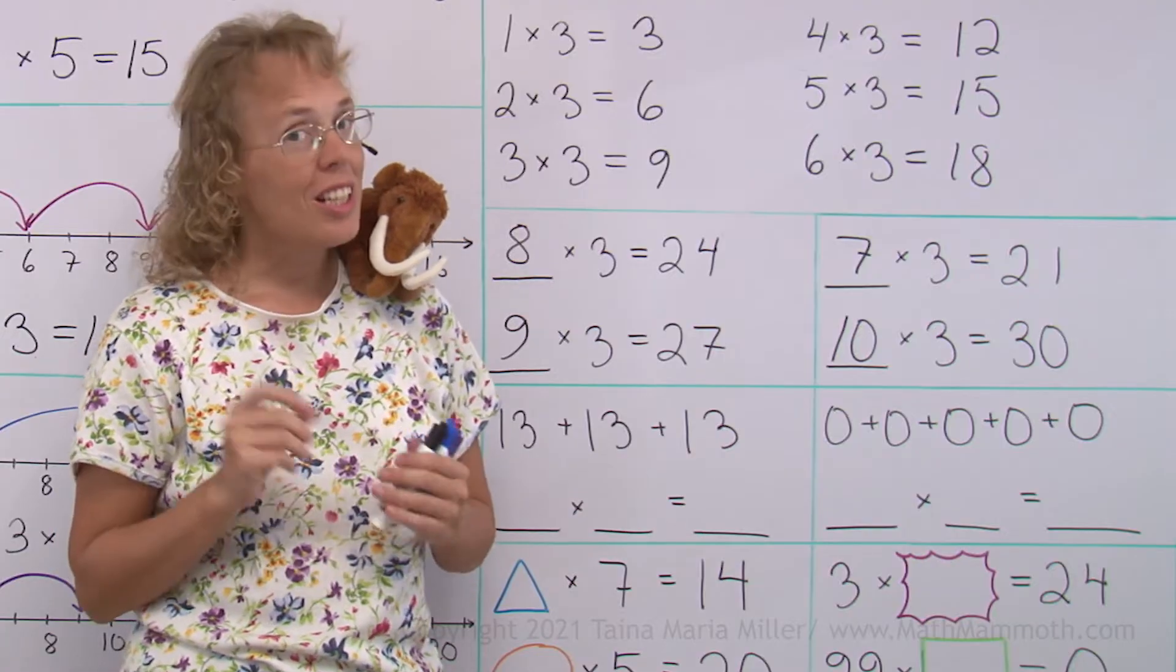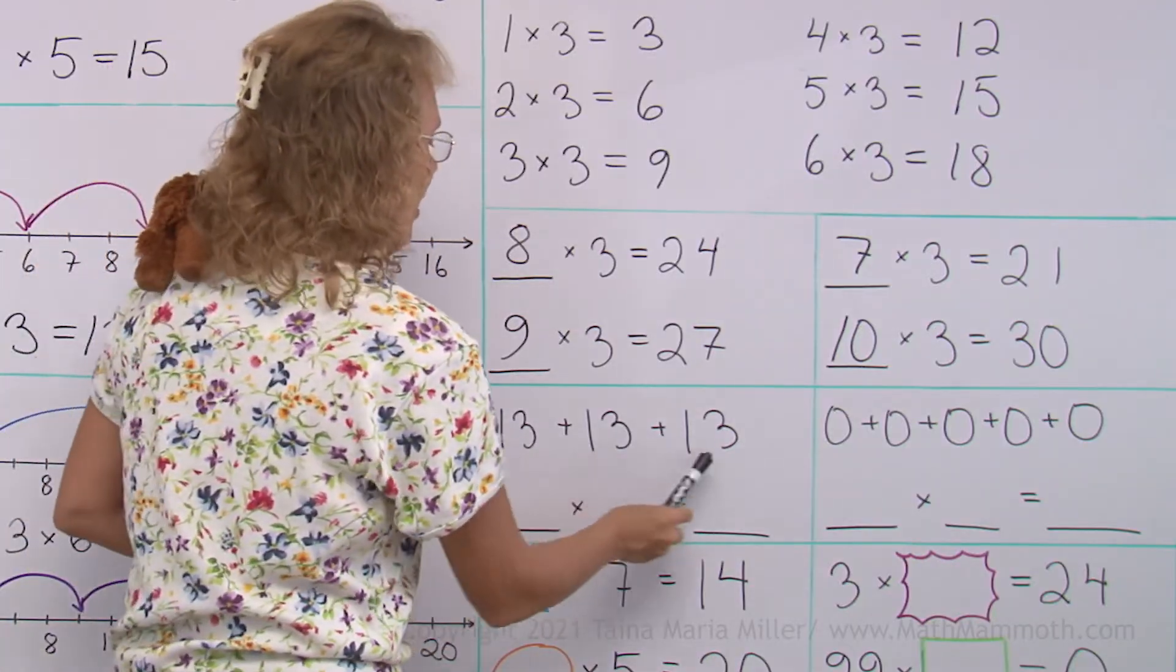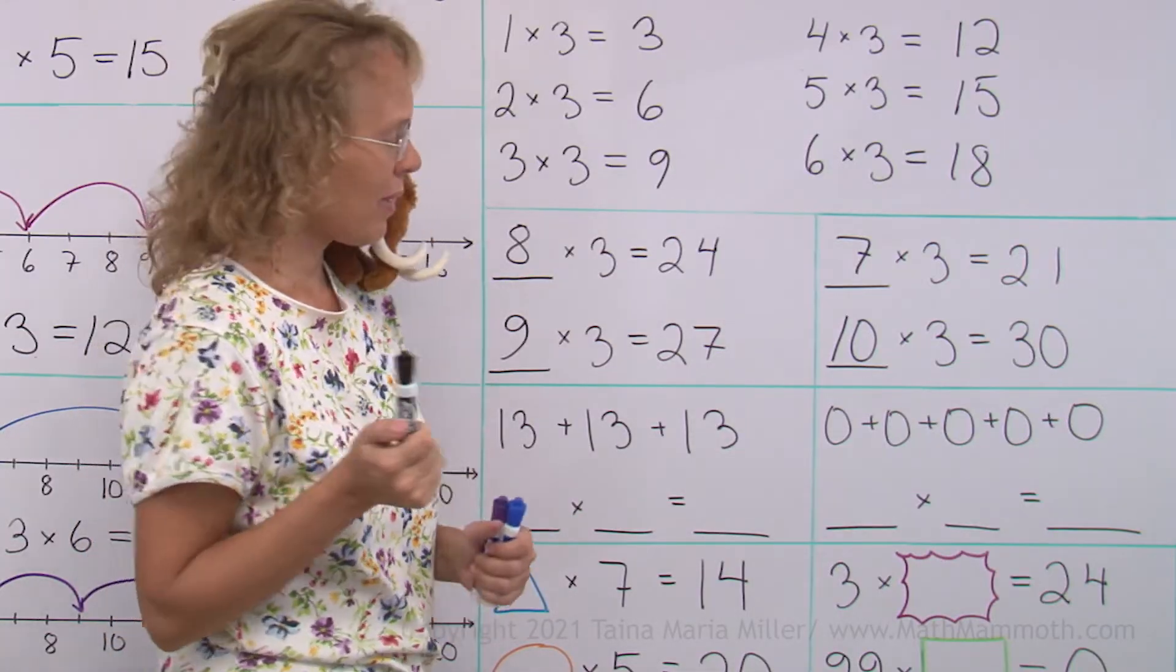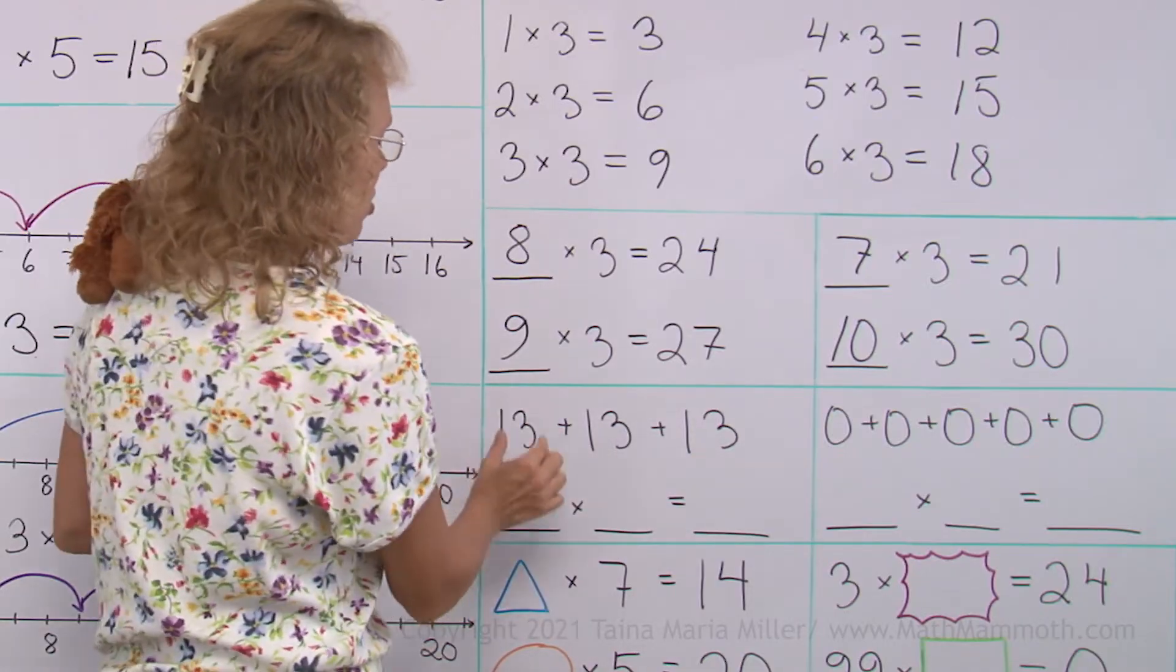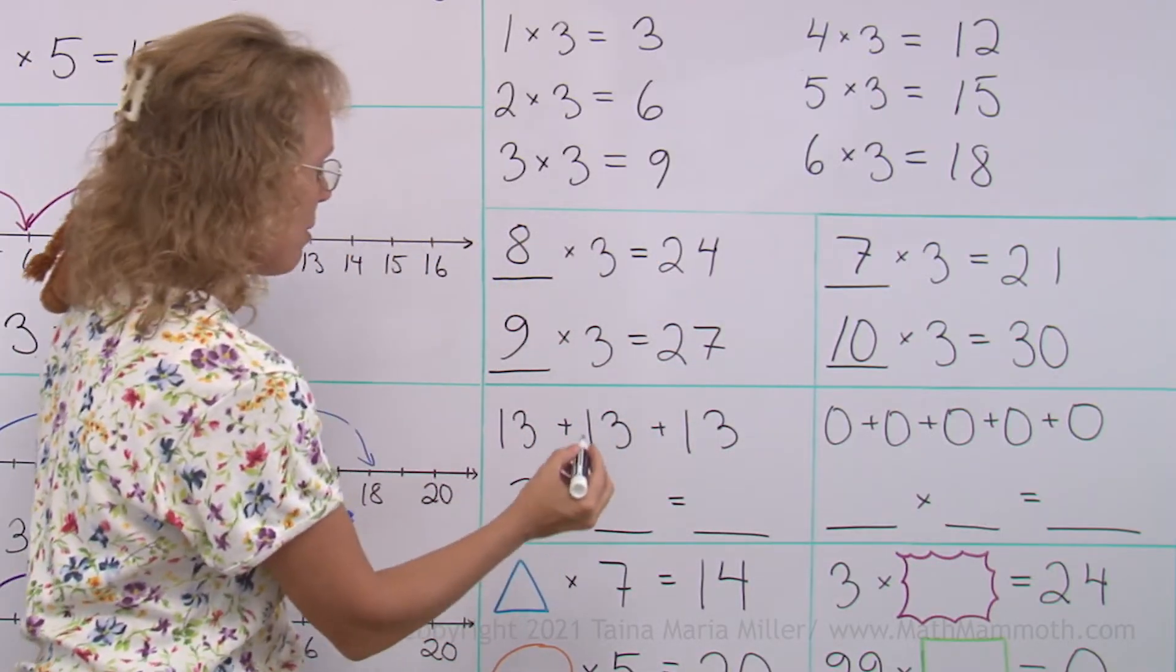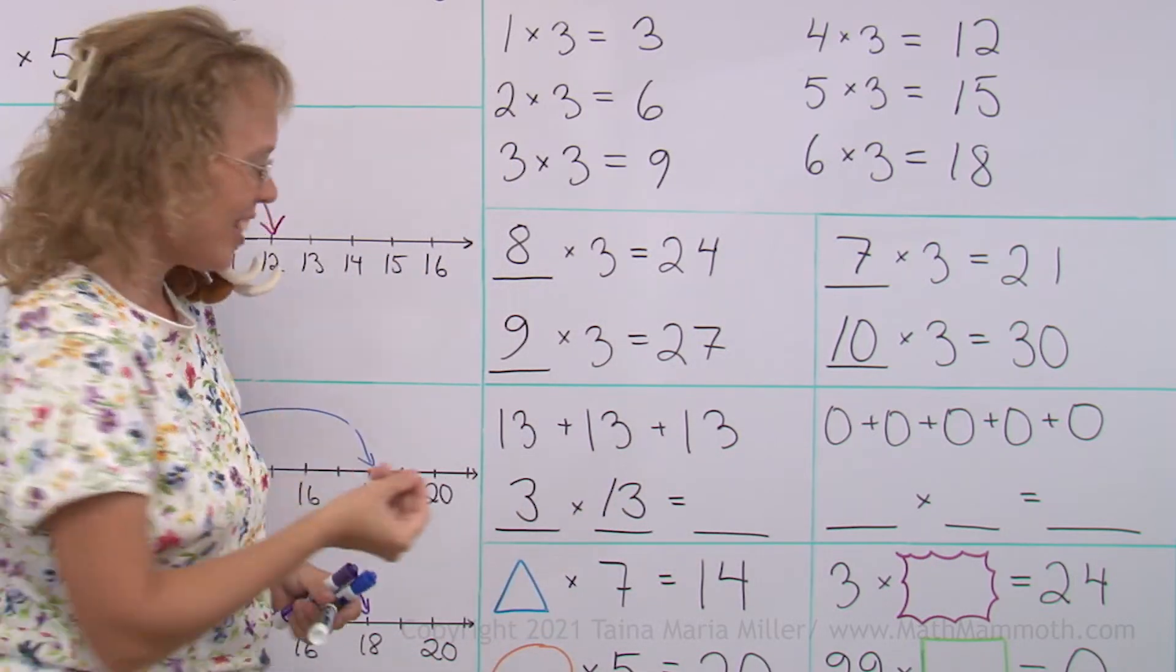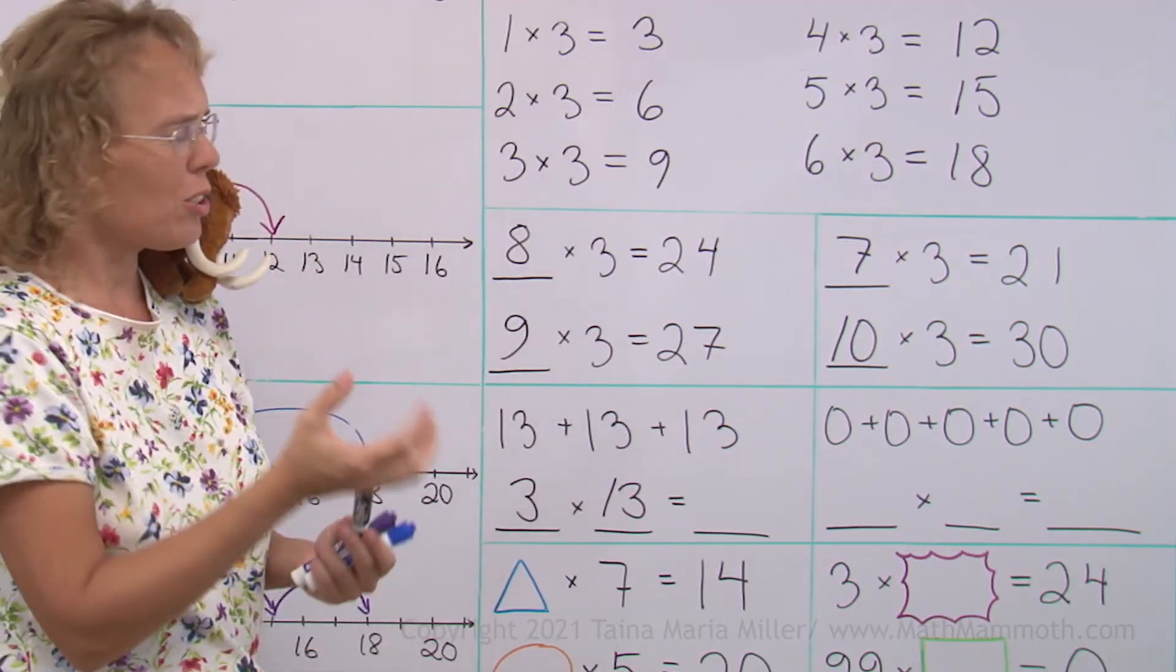Lastly, we're gonna do just a little bit of review. Here's an addition. How do you write it as a multiplication? We're adding the same number many times. It's like a group of thirteen, group of thirteen, group of thirteen. Three groups. So three times thirteen. But to solve it, you add. What's thirteen and thirteen and thirteen? You should get thirty-nine.